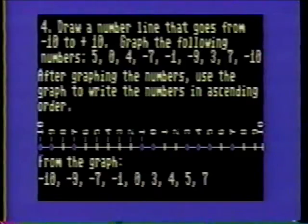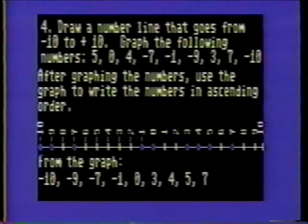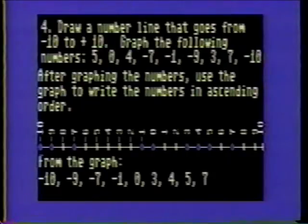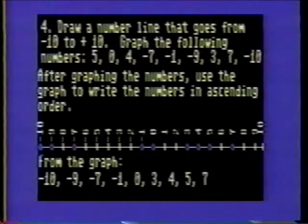Reading from left to right, the numbers in ascending order are: negative 10, negative 9, negative 7, negative 1, 0, 3, 4, 5, 7.